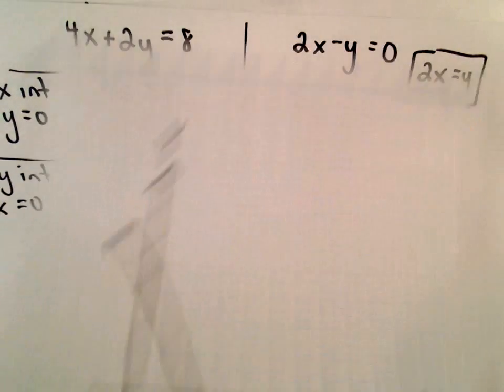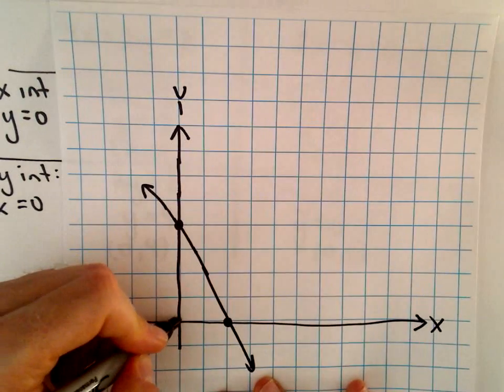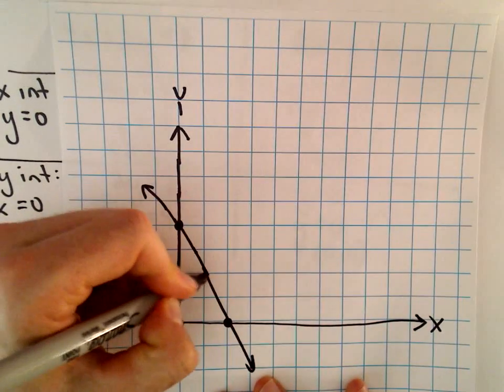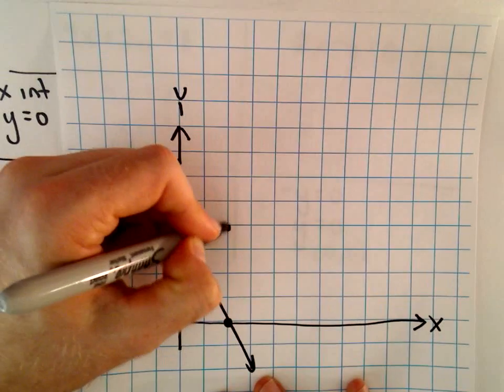And then likewise, we have y equals 2x. So that's going to have a y-intercept of 0, and then we go up 2 over 1, up 2 over 1, etc.